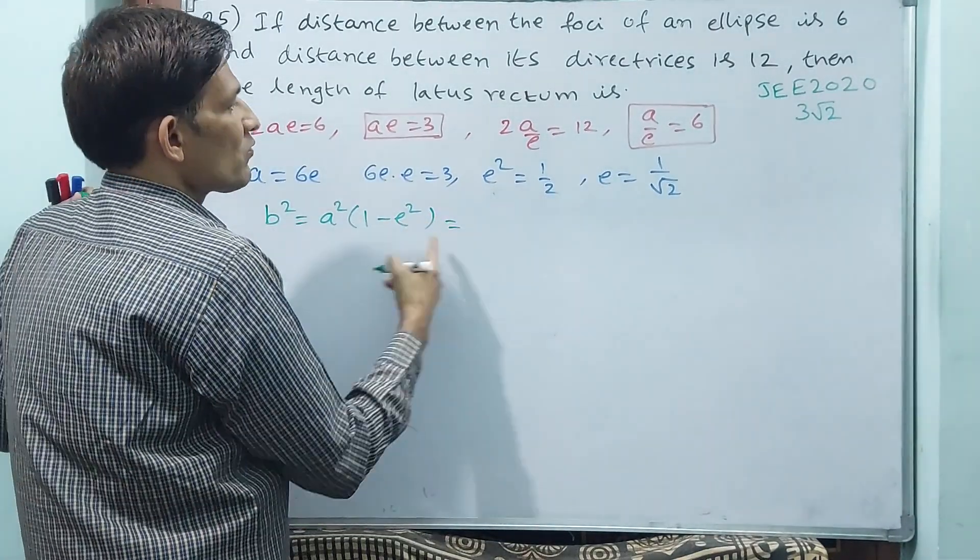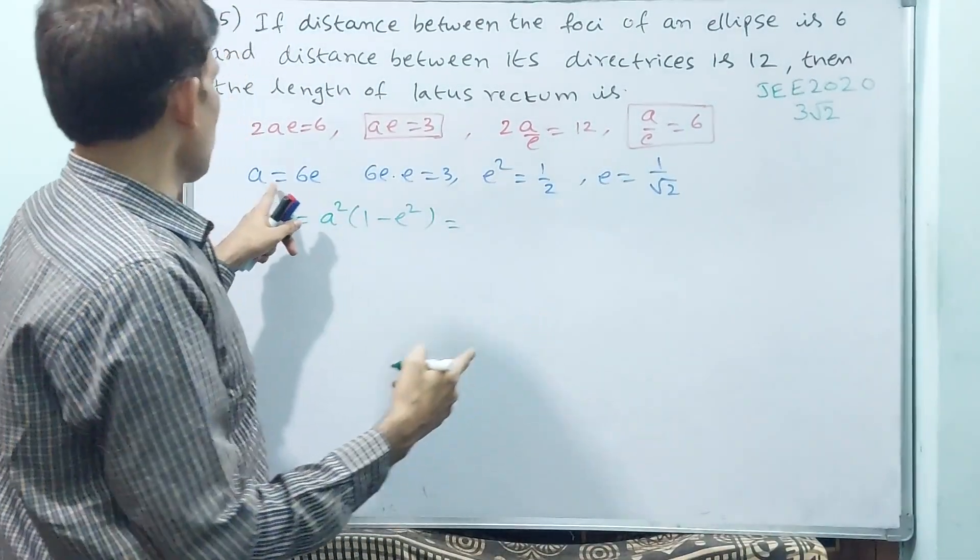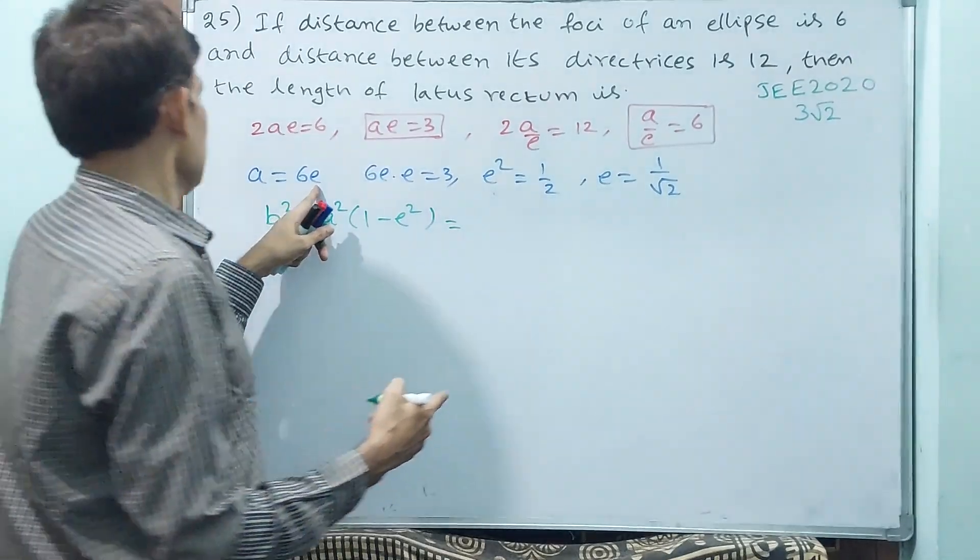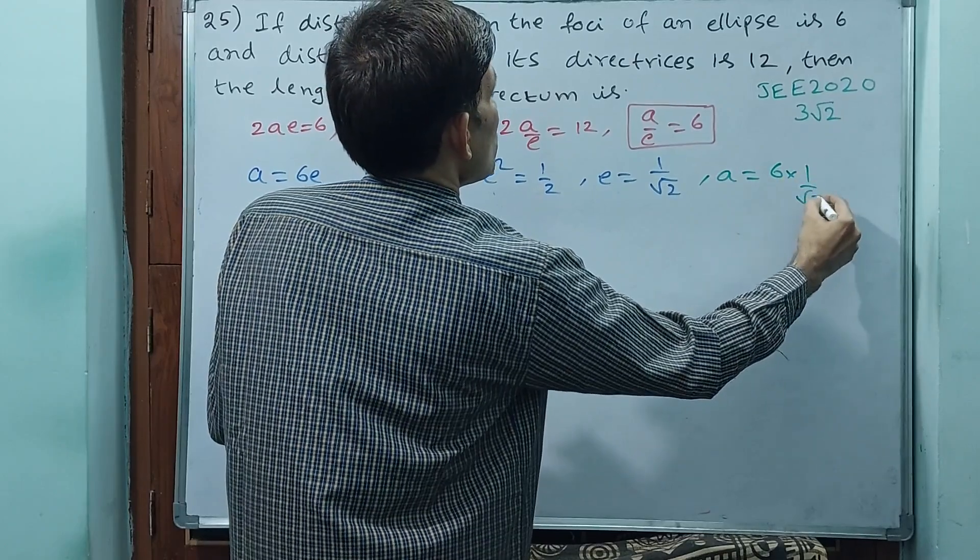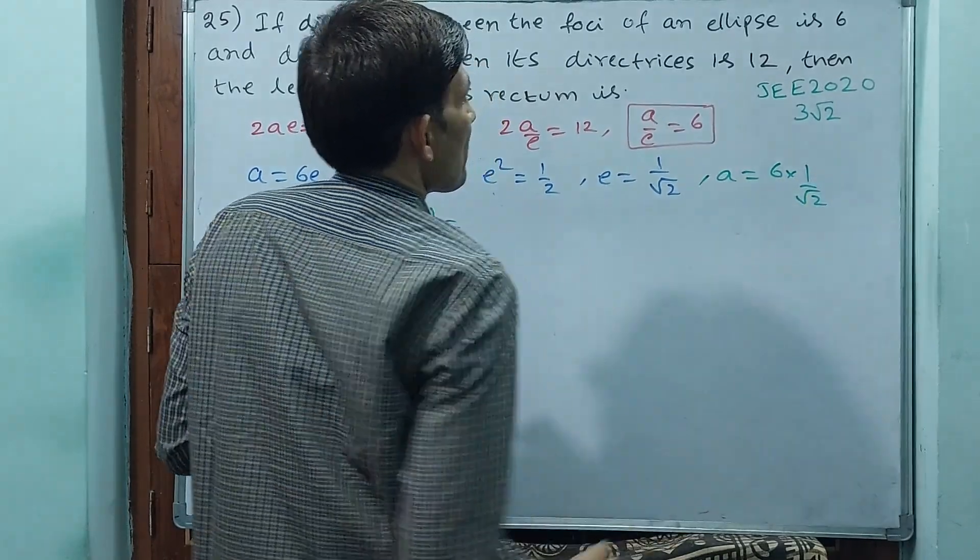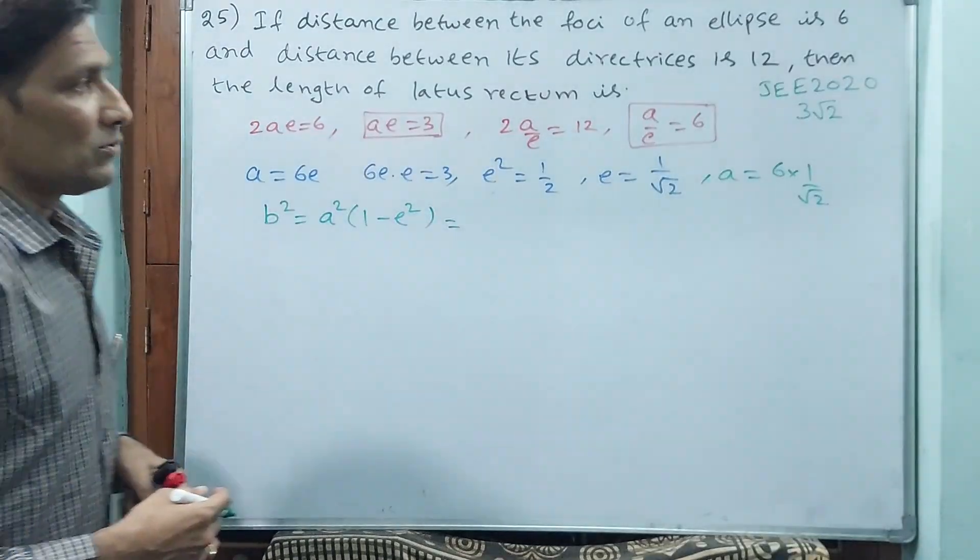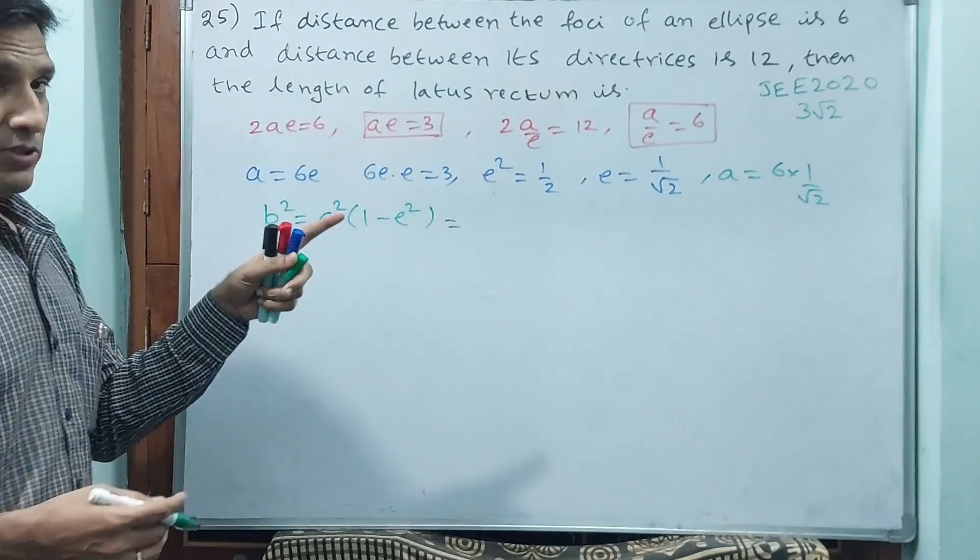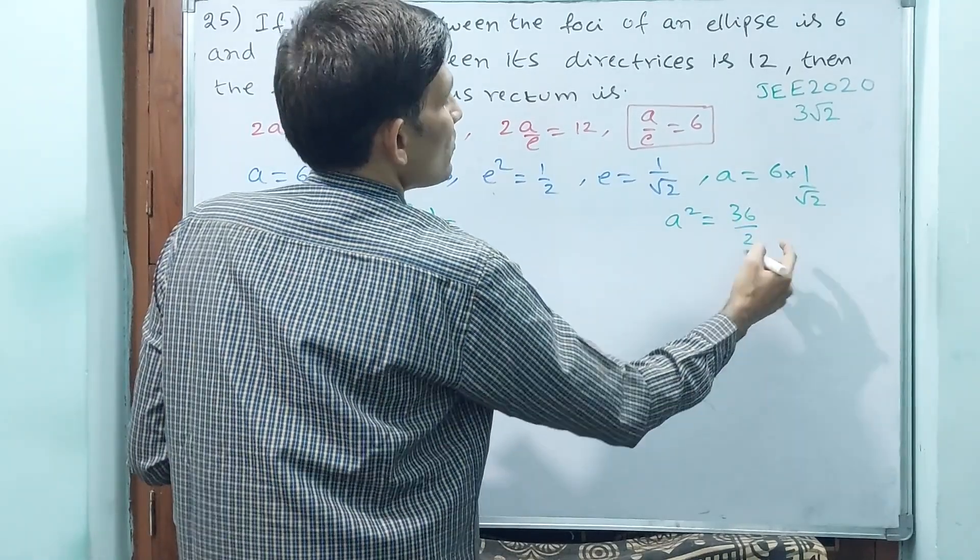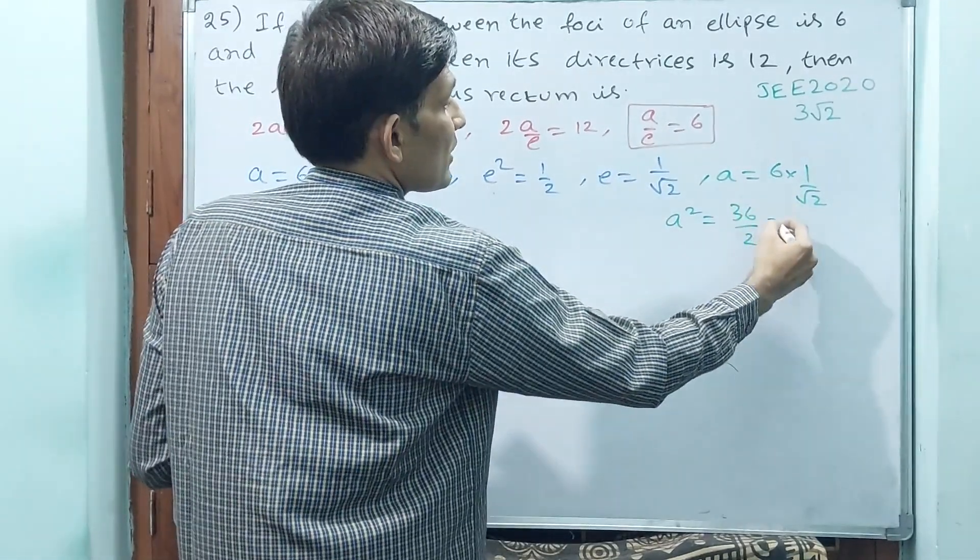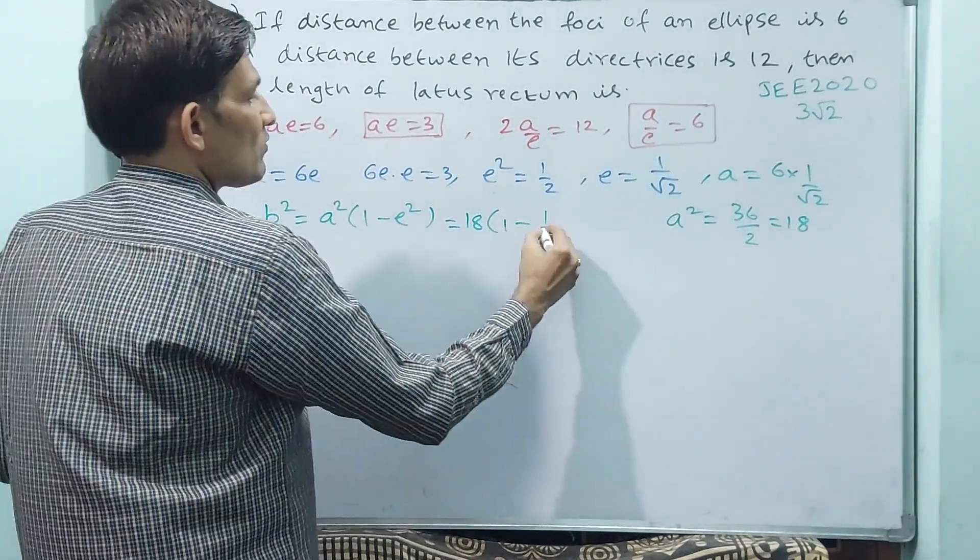Right now, that is equal to, A² value is how much? A you can find. See, here you know A is equal to 6 into 1 by root 2. That is A value only. A square also you require. See, A² is equal to 36 by 2, that means 18. Now write down A², 18 into (1 minus E²) value is 1 by 2.